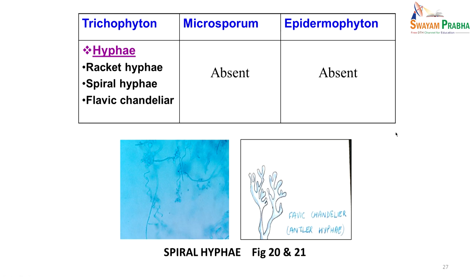It is important to identify the species because different species have different sensitivity to antifungal agents, and we need to know how long treatment will take. Trichophyton rubrum is the notorious species known to take a long time to treat and is resistant to many antifungal agents — hence identifying the fungus is important for the patient's long-term treatment.